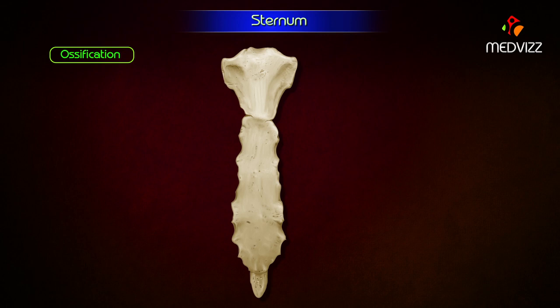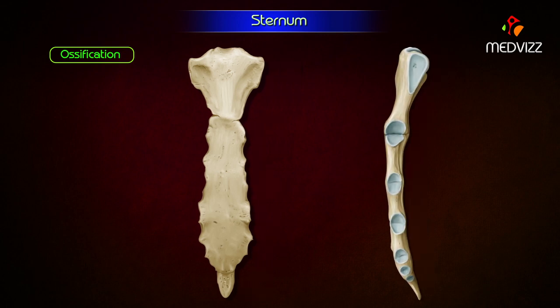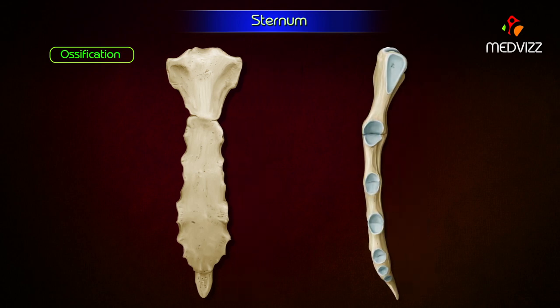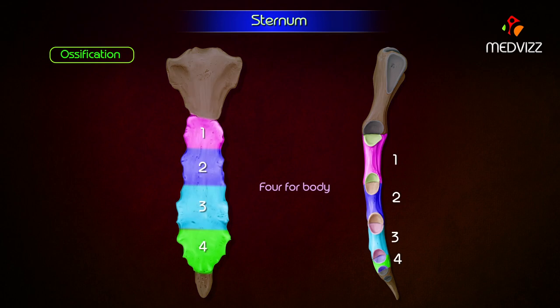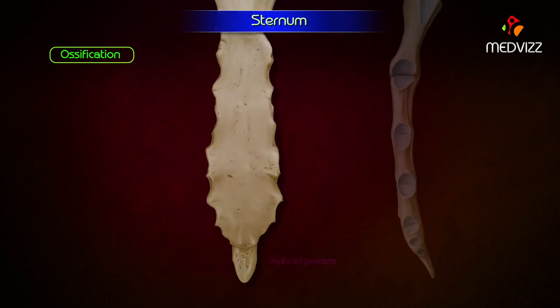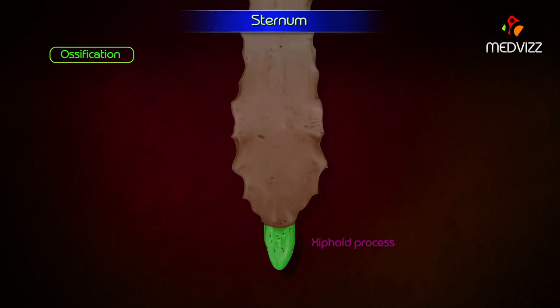Ossification. The sternum develops from two vertical cartilaginous plates, which fuse in the midline. The sternum ossifies from six double centers: one for the manubrium, four for the body, and one for the xiphoid process.